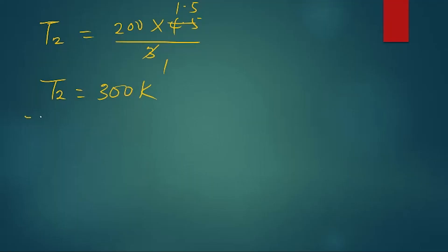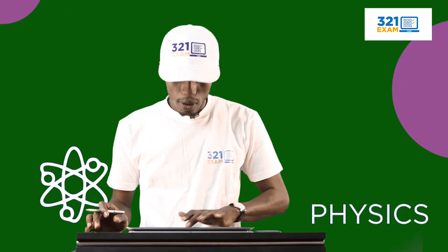So the answer is 300 Kelvin. If you want to convert to degrees Celsius, it's now going to give you 300 minus 273. And that gives you 27 degrees Celsius. So your answer is either 27 degrees Celsius or 300 Kelvin, depending on the units you are given.